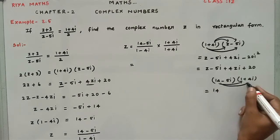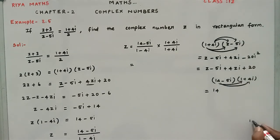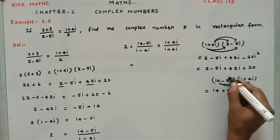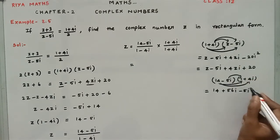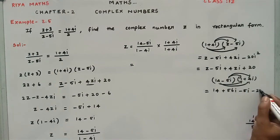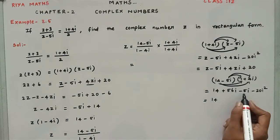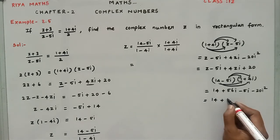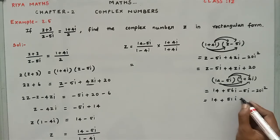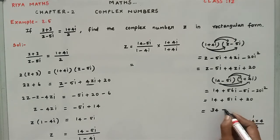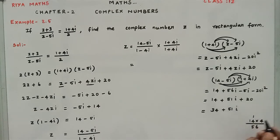Expanding the numerator: 14 × 1 = 14, 14 × 4i = 56i, -5i × 1 = -5i, -5i × 4i = -20i² = +20. Combining: 14 + 20 = 34 for the real part, and 56i - 5i = 51i for the imaginary part. So the numerator is 34 + 51i.